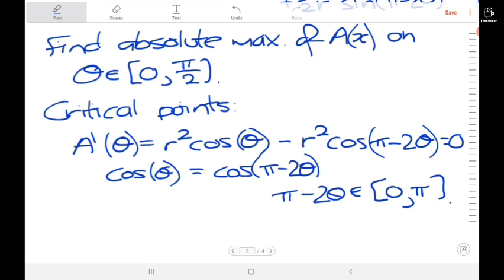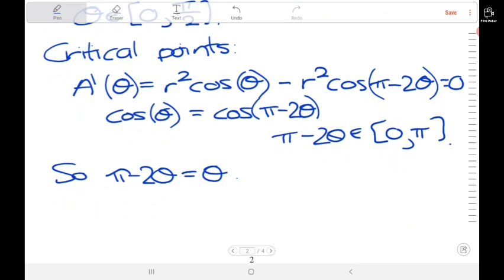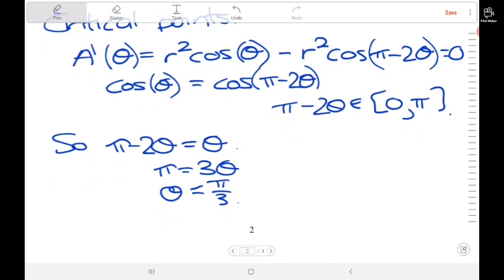If you have a look at the graph of cosine, the only point at which this can occur is if pi minus 2 theta equals theta. So that means pi is equal to 3 theta, so theta equals pi over 3. So we found a critical point.